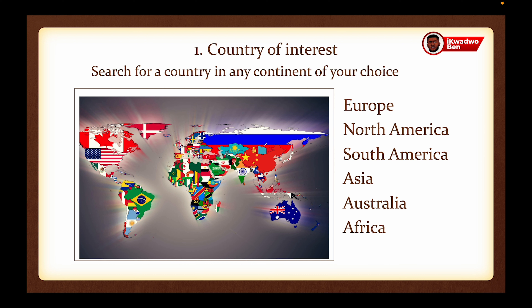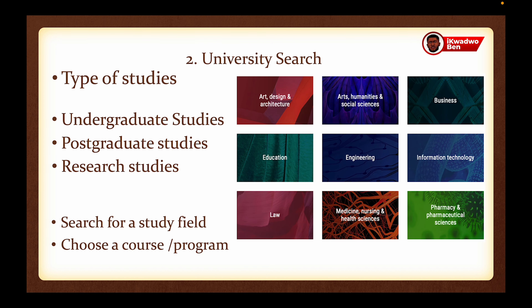Now let's dive into it. For your country of interest, we have seven continents in the world. You can search for a country in any continent of your choice — we have Europe, North America, South America, Asia, Australia, and Africa. Based on your interests, you can search for the country that you want to study in. After figuring out which country you want to study in, you can move on to search for the universities available.